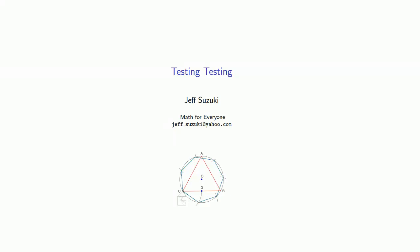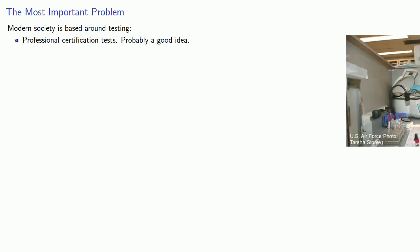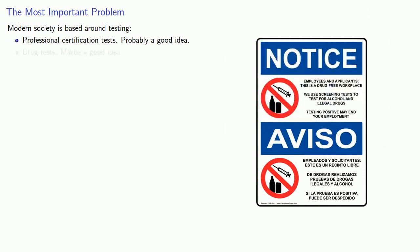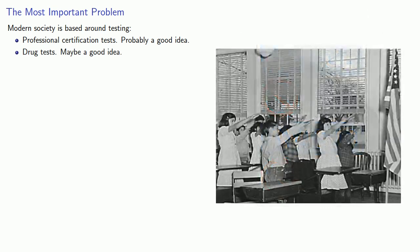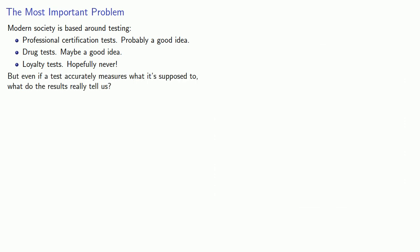A misunderstanding of conditional probability leads to many abuses centered around testing. For better or for worse, modern society is based around testing — things like professional certification tests, which are probably a good idea, drug tests, and loyalty tests, which if we have, we will no longer have a free society. But even if a test accurately measures what it's supposed to, what do the results really tell us?